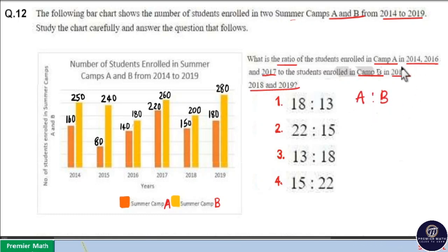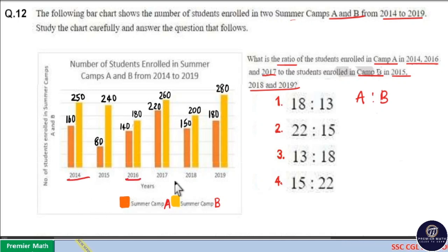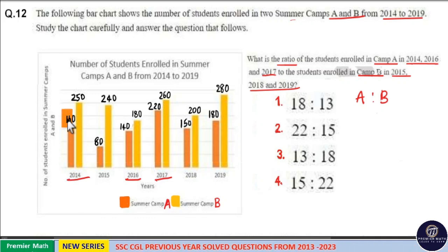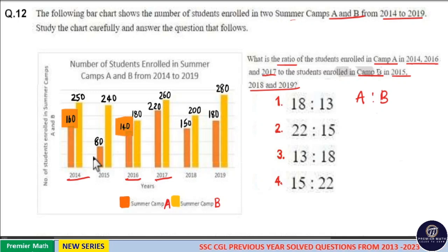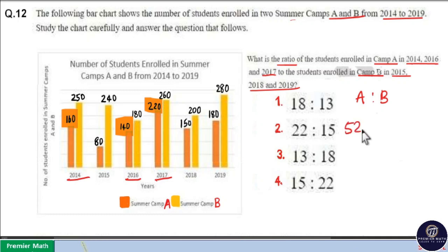We need the number of students enrolled in camp A for 2014, 2016, and 2017. Camp A is shown in orange color: 160 plus 140 is 300, and 300 plus 220 is 520. So camp A has 520 students enrolled across those three years.